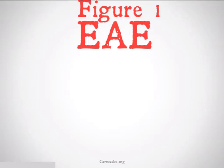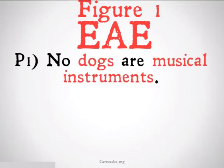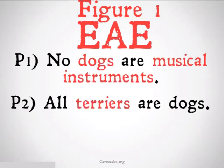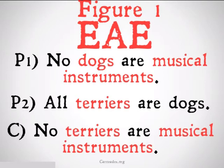Figure one, EAE: no dogs are musical instruments, all terriers are dogs, therefore no terriers are musical instruments. We see in our conclusion, terriers and musical instruments are distributed, and those terms are both distributed in our first two premises. We also notice it passes rule one because dogs, the middle term, is also going to be distributed.